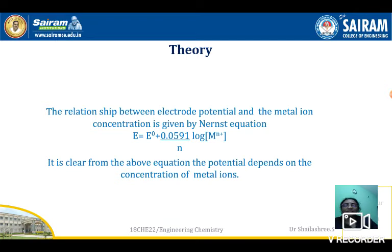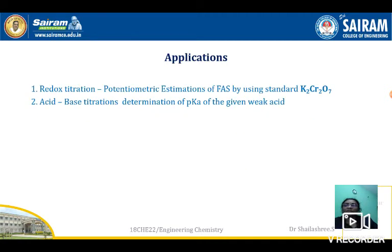The relationship between electrode potential and metal ion concentration is given by the Nernst equation: E = E° + (0.0591 / n) × log [Mⁿ⁺]. It is clear from this equation that the potential depends on the concentration of metal ions. Applications of potentiometry include redox titration — such as potentiometric estimation of FAS — and acid-base titration — such as determination of pKa of a weak acid.